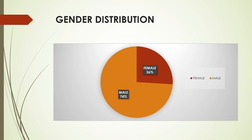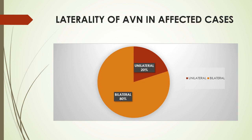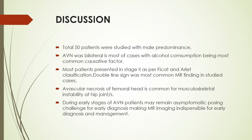Gender distribution: about 74% of the patients were male and 26% were female. Regarding laterality, about 80% of the cases were bilateral. There was male predominance with around 60–65% of the patients being male. AVN was bilateral in most cases, with alcohol consumption being the most common causative factor. Most patients presented in stage 2 as per FICAT and ARLET classification, and double line sign was the most common MRI finding in the studied cases.